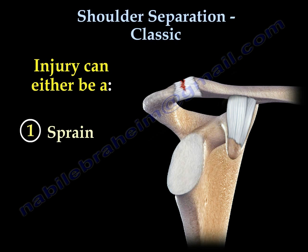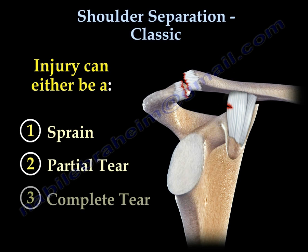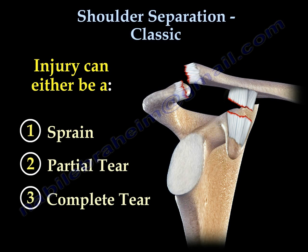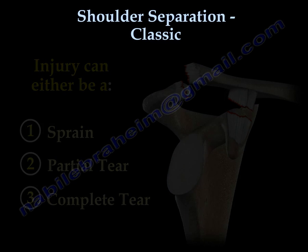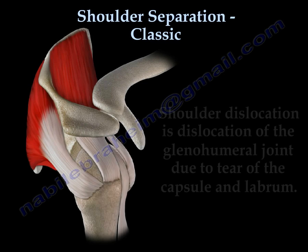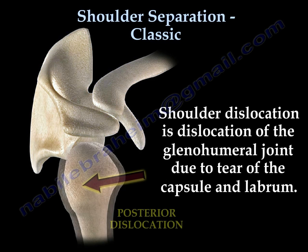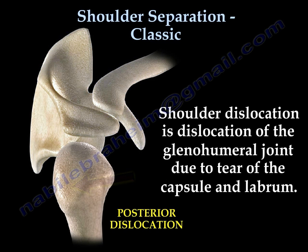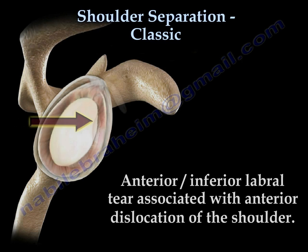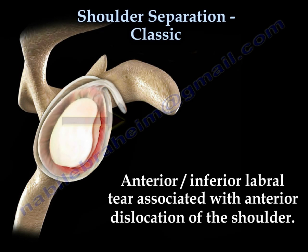The injury can be a sprain, partial tear, or complete tear of the ligaments. Shoulder dislocation, by contrast, is a dislocation of the glenohumeral joint due to tear of the capsule and the labrum — specifically an anterior inferior labral tear associated with anterior dislocation of the shoulder.